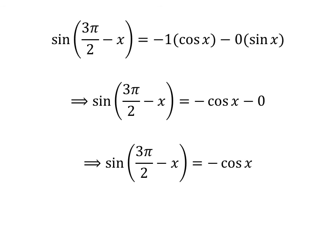As minus 1 into cosine of x is equal to minus cosine of x, and sine of x times 0 is equal to 0. So, sine of 3 times pi upon 2 minus x is equal to minus cosine of x minus 0, which is equal to minus cosine of x. So, the value of sine of 3 times pi upon 2 minus x is equal to minus cosine of x.